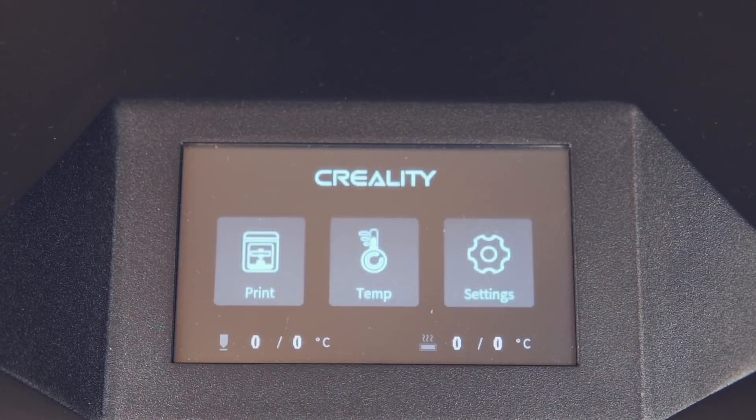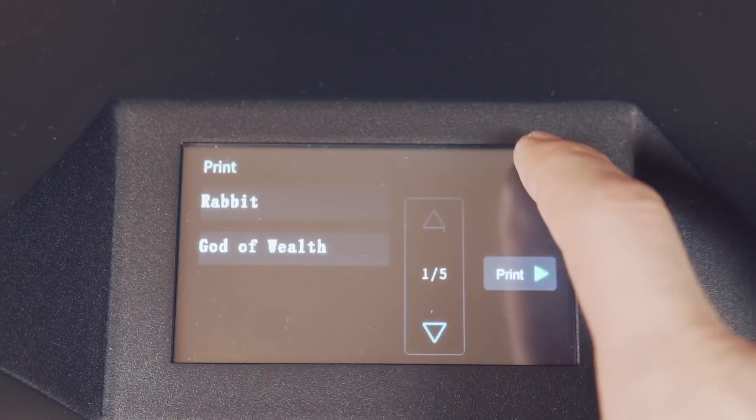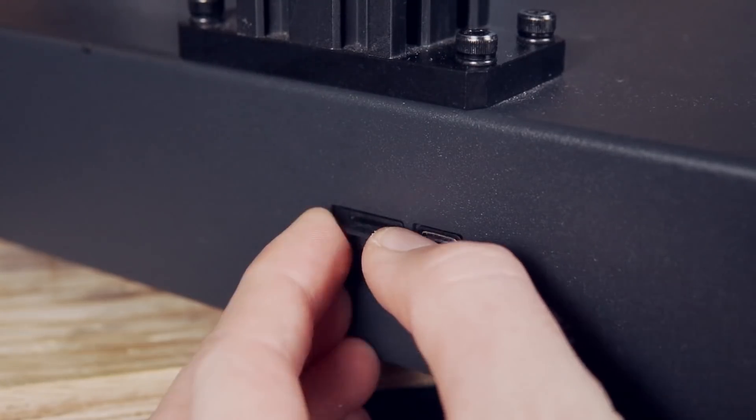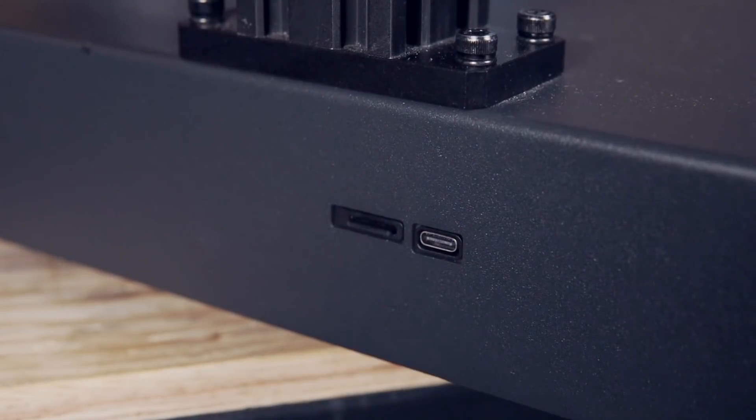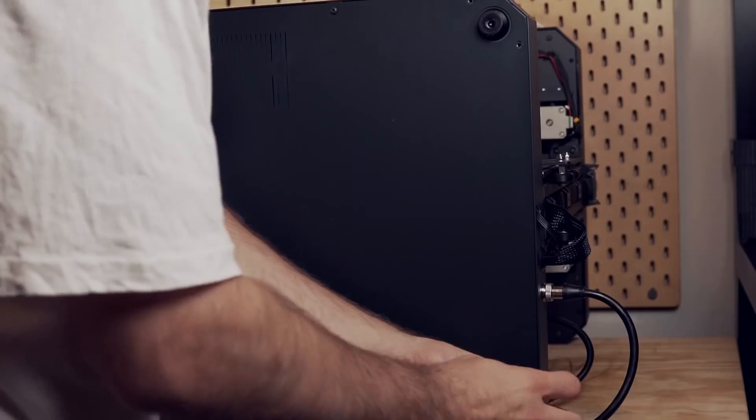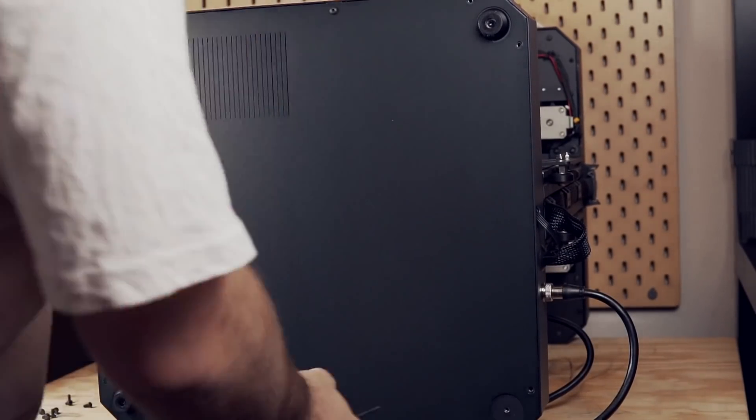Interfacing with the Ender 7 is done through the four inch touchscreen on the front where you can print files from a micro SD card. There's also a USB-C port which is pretty cool to see that will allow you to hook your printer up to your computer or OctoPrint. It is a 24 volt system running what I believe is Marlin. I did not see any mention of it on their website and looked around for the source code without any luck.